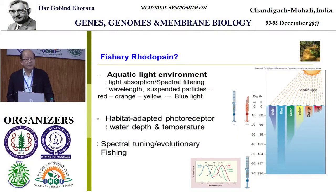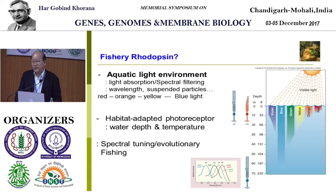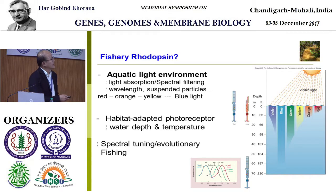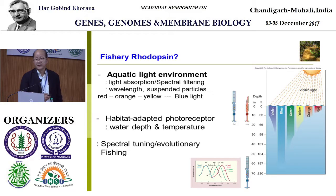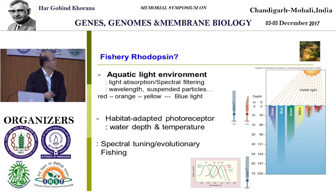The reason we are interested in fishery rhodopsin is that the aquatic environment is slightly different from the light environment in terrestrial systems. In terrestrial systems, multiple wavelengths of visible light are present. But in aquatic environments, depending on water depth, you face different wavelengths of light due to differences in light absorption of the water — what we call spectral filtering. Light with longer wavelengths is absorbed near the surface, while light with shorter wavelengths can penetrate further down to the bottom.